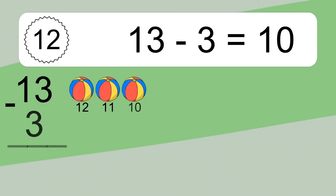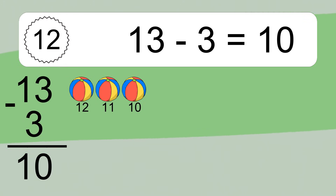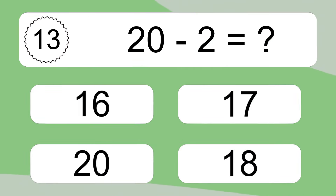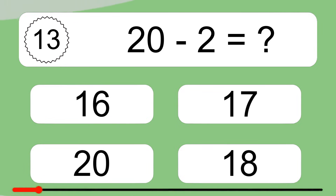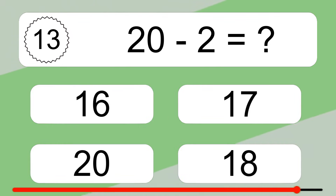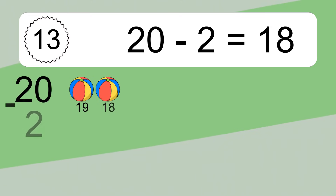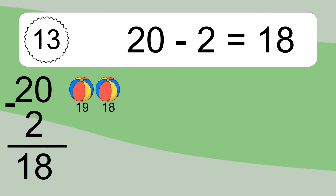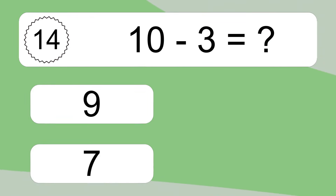13 minus 3 equals what? 13 minus 3 equals 10. Let's count it: 12, 11, 10. 20 minus 2 equals what? 20 minus 2 equals 18. Let's count it: 19, 18.